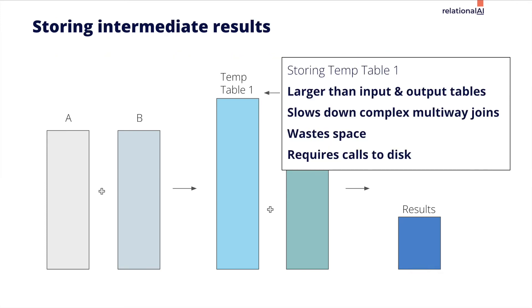Notice that the temp table is often larger than the two input tables, and it can be much larger. Not only that, but the temp table is larger than the results. You also have to store the intermediate table somewhere. This wastes memory, and for large joins, the temporary table can be of a non-trivial size.